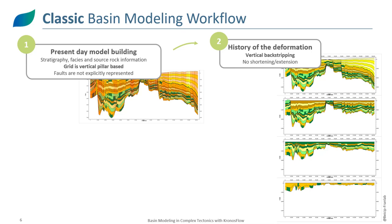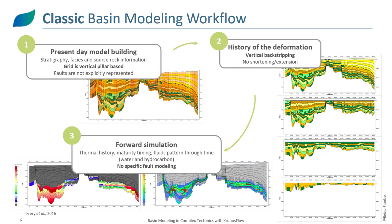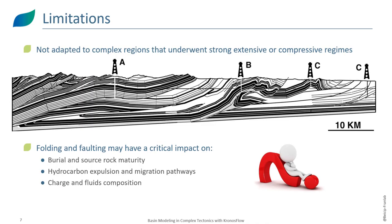Once we have the present-day model, we reconstruct its history through time via vertical back-stripping, accounting for decompaction of the layers, but with no shortening or extension taken into account. Then we perform a forward simulation computing thermal history, source rock maturity, and hydrocarbon and water migration. There is no specific fault modeling done. This approach is not adapted to complex regions that underwent strong extensive or compressive regimes.